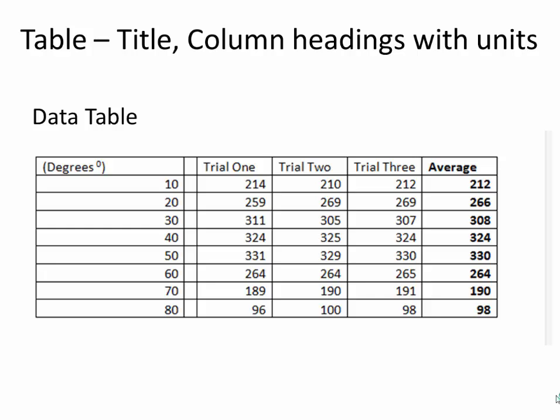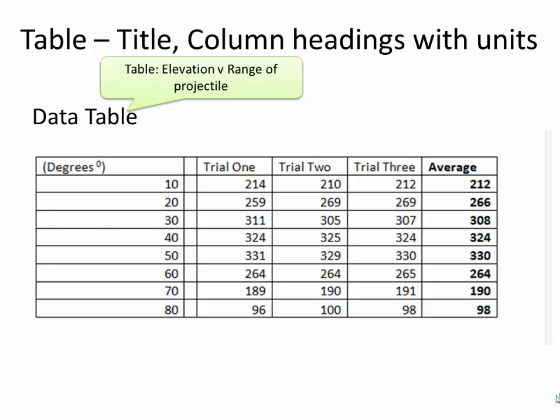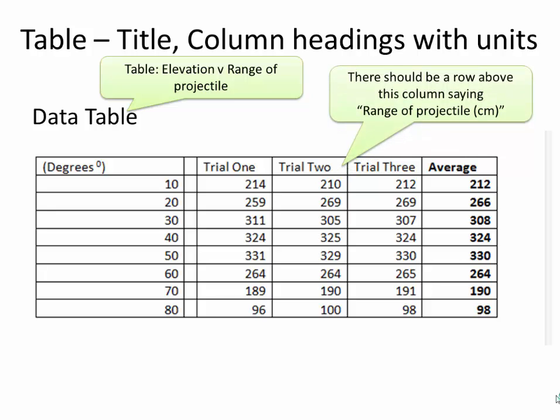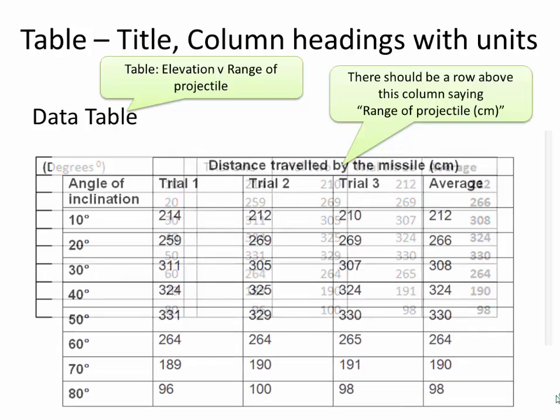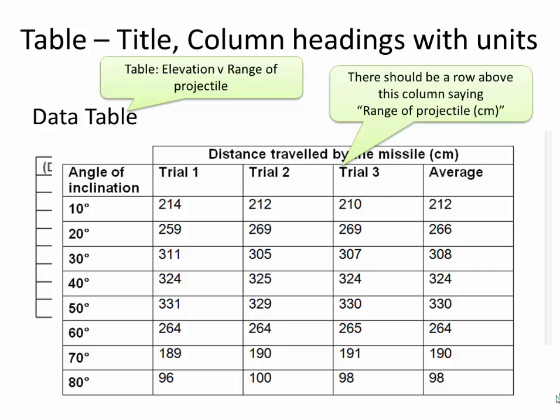How can we improve on this? First of all the description should be much better — for example, a table of the elevation versus the range of the projectile. The second thing: there should be a row above the column saying what it's measuring, such as the range of the projectile, along with the units. Notice you just need another row above the table.